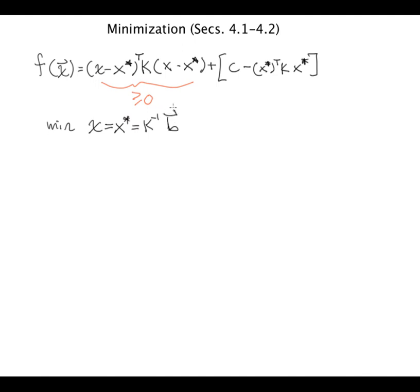So the minimum is when x is equal to x star, which I'll remind you is k inverse applied to b. And that's what I was trying to show. That proves that there is a unique minimum. This is provided k is positive definite, and it's given by x star is equal to k inverse applied to b.